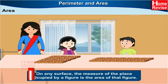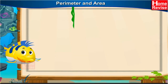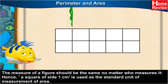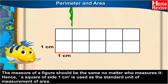On any surface, the measure of the place occupied by a figure is the area of that figure. The measure of a figure should be the same no matter who measures it. Hence, a square of side 1 cm is used as the standard unit of measurement of area.